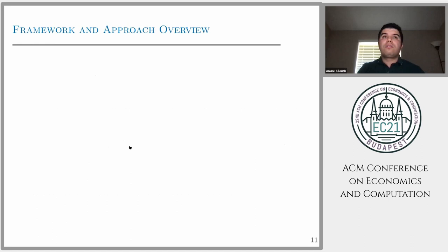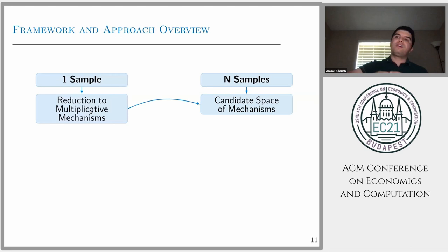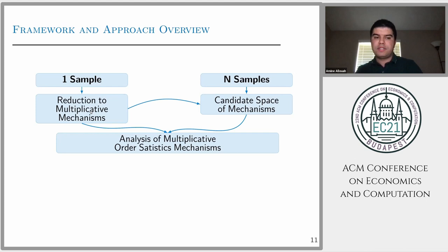Given these challenges and the problem formulation, let's look at the approach we followed. Our approach is motivated by the one sample case. In the one sample case, previous work has shown that reduction to multiplicative mechanisms is without loss of optimality. In other words, if the seller takes one sample and multiplies, say by 0.8 or 0.7, this class of mechanism is without loss of optimality. This class of mechanism has inspired us to extend it beyond one sample to identify candidate space of mechanisms to any N samples.